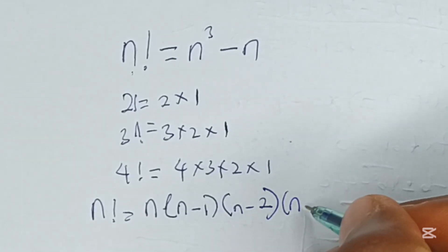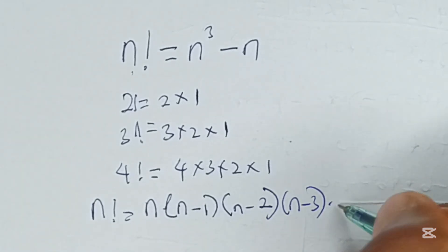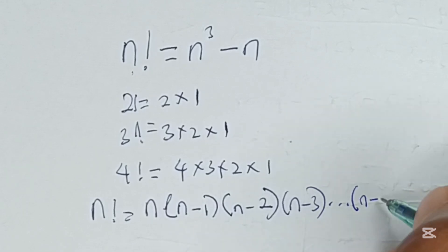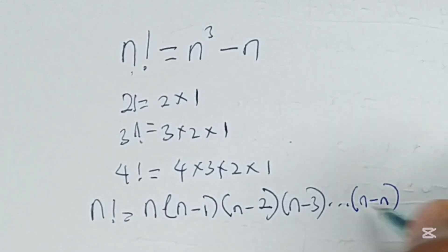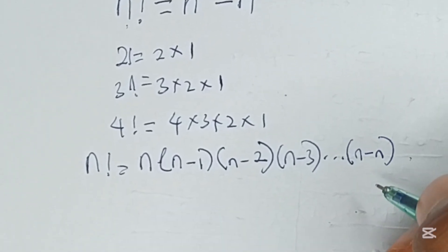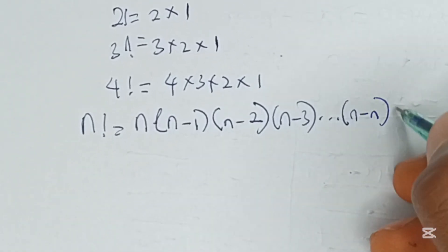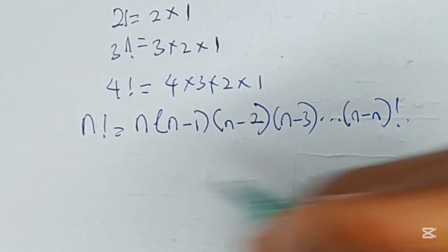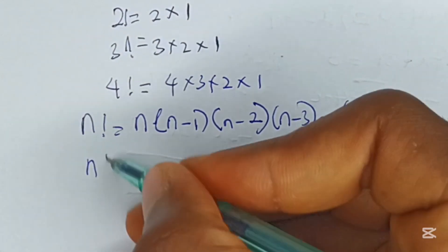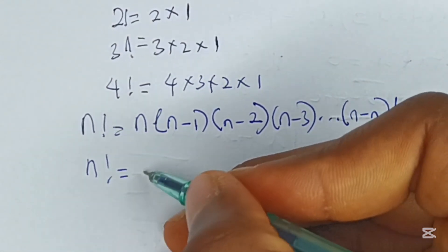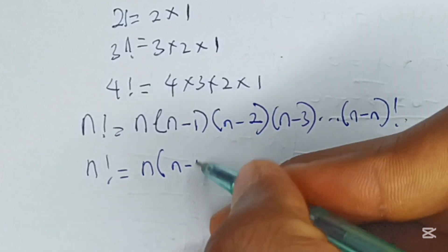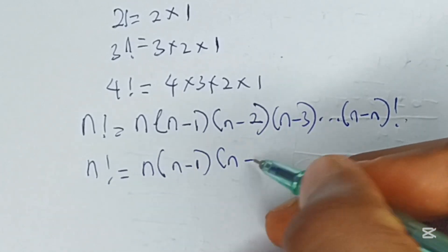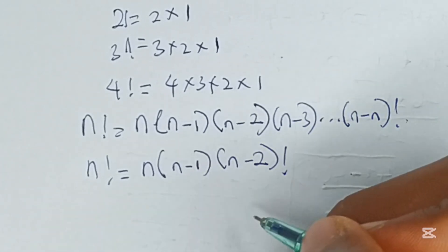...into n minus 3, dot dot dot, into n minus n, which is the last term. Hence, you can also see from here that n factorial will be equal to n into n minus 1 into n minus 2 factorial.